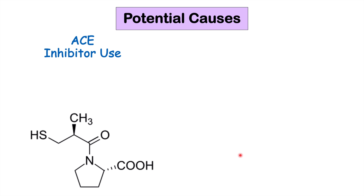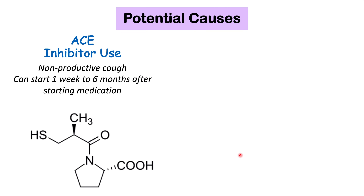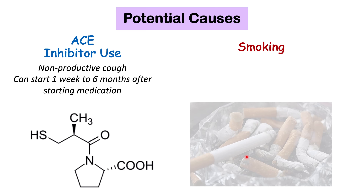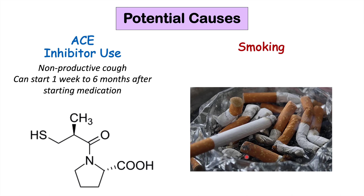What's gathered from the history — including medications and smoking status — is very important in identifying two key causes of chronic cough. One is ACE inhibitor use; medications ending in the suffix -pril, like captopril or perindopril, can lead to a non-productive dry cough starting within one week to up to six months after starting the medication, and it typically resolves within two to six weeks after stopping the ACE inhibitor. Smoking is also an important cause, often leading to a productive cough. Both are easily determined from history and can be addressed to help reduce the chronic cough.